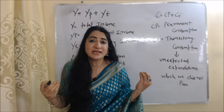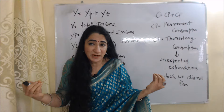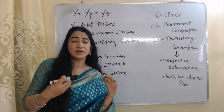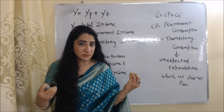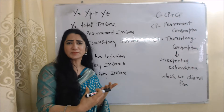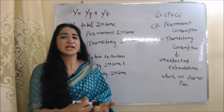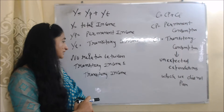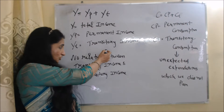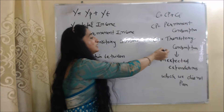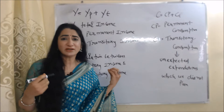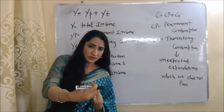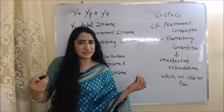Transitory consumption is unexpected expenditure which we did not plan. For example, someone is suddenly diagnosed with a disease and has to spend a lot of money at a hospital — that is transitory consumption. Importantly, there is no relationship between transitory income and transitory consumption. You cannot say you will only go to the doctor when you win a lottery or get an incentive.